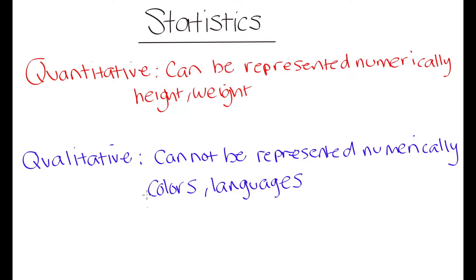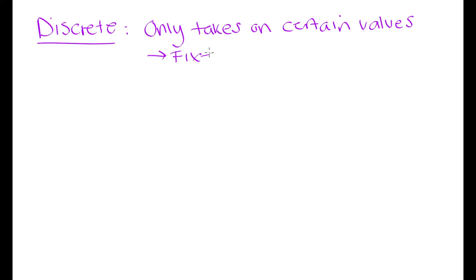Another thing I want to go over is the difference between discrete and continuous data. Discrete data is data that can only take on certain values — in other words, a fixed number of values. For example, the number of friends a person has can only be 1, 2, 3, 4, 5, and so on, up to infinity, but we can't have something like 3.4 friends. That is an example of discrete data, because the data set is fixed based on the values it can take on.